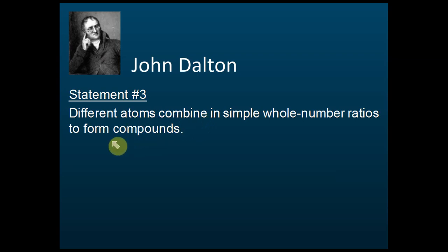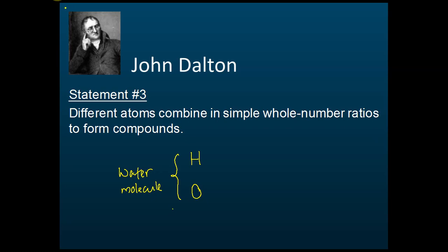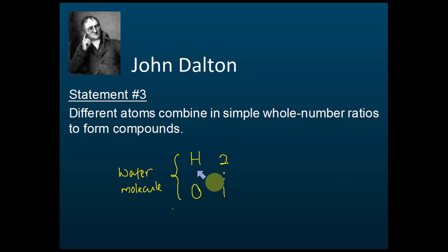Atoms combine together to form a compound, and they combine according to a certain ratio. For example, inside a water molecule there are two types of atoms — hydrogen and oxygen. John Dalton says these atoms of hydrogen combine with atoms of oxygen to form a compound called water, and the ratio is H₂O, which is 2 to 1. Every water molecule always has this same ratio.